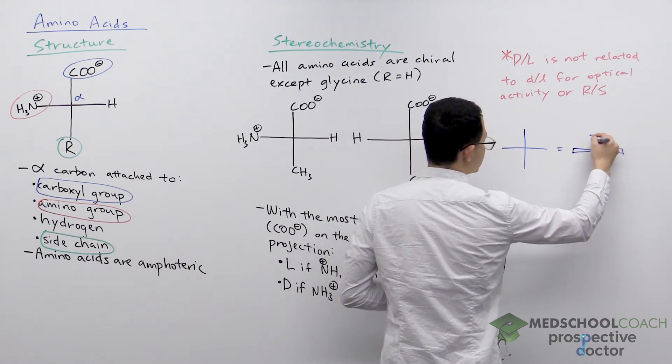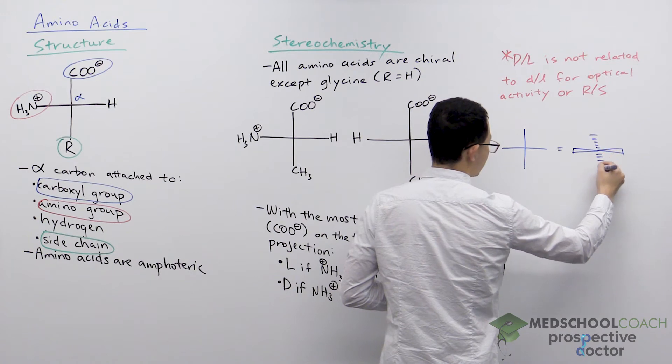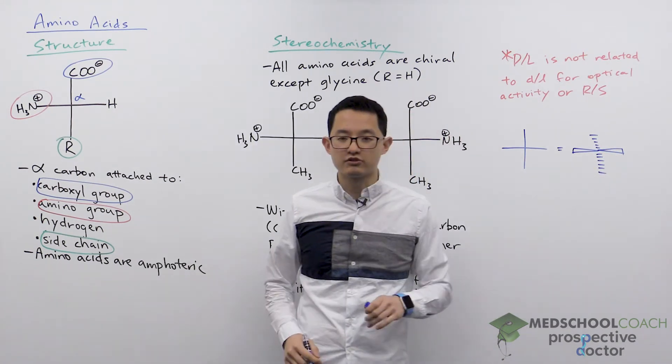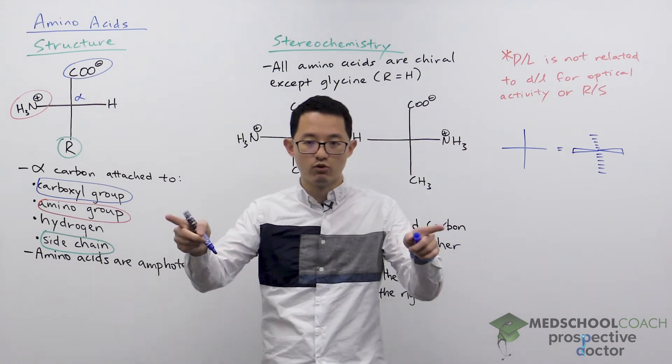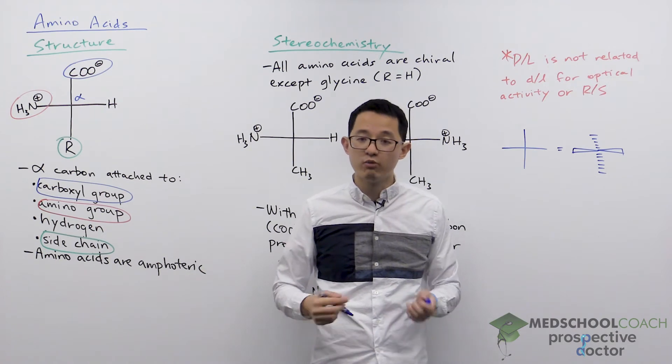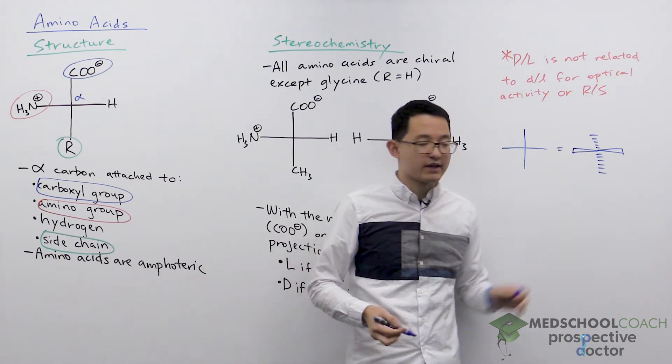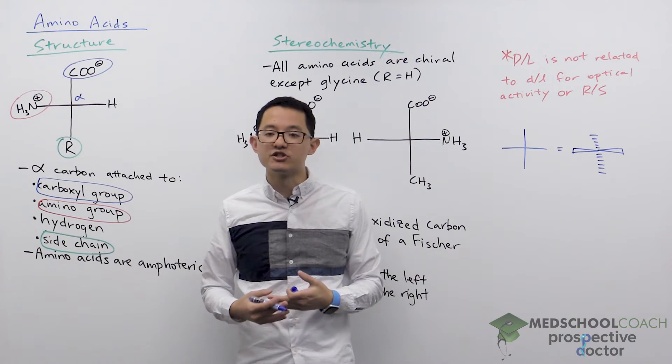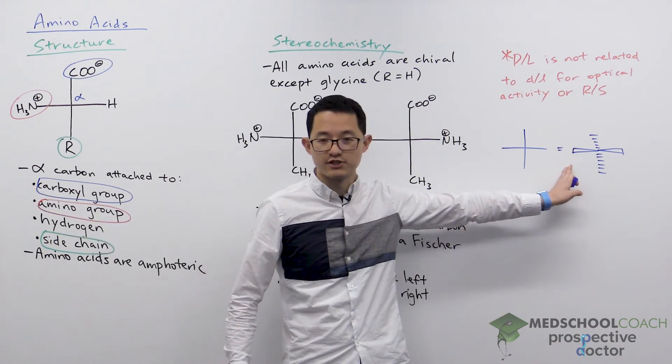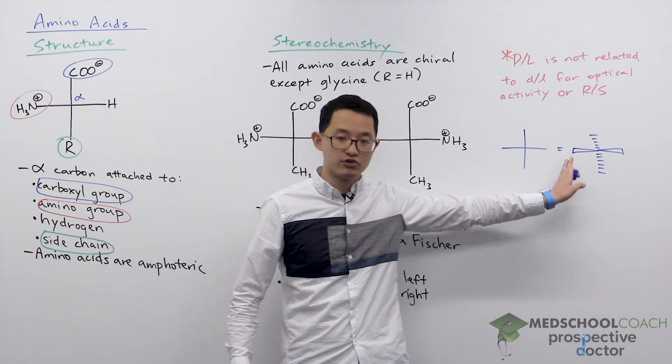and some substituents going into the page away from you. Specifically the horizontal components are coming out of the page towards you and the vertical components are going into the page away from you. The way I usually like to remember it is to pretend that someone's trying to come give you a hug. So that way you know the horizontal substituents are coming out of the page towards you.